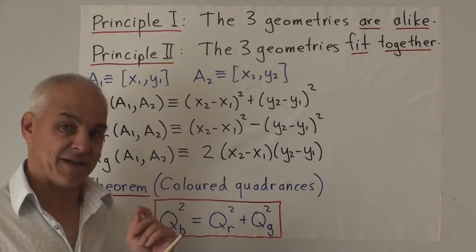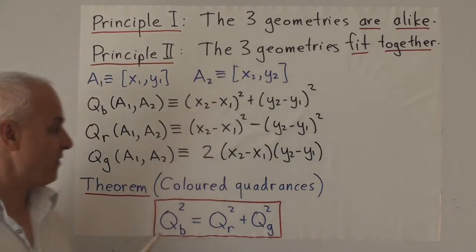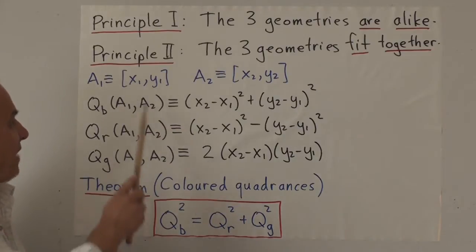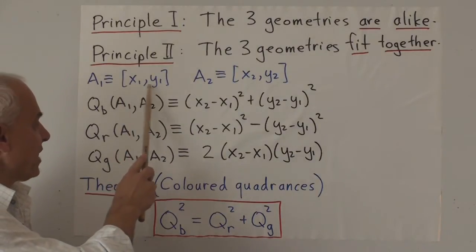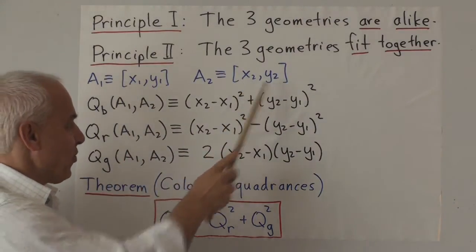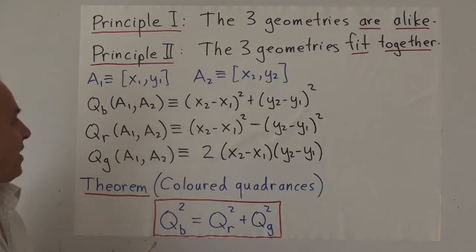Now let's remind you of a few basic definitions and a few fundamental facts that start chromo geometry. If we have two points A₁ = (x₁, y₁) and A₂ = (x₂, y₂), then the quadrance between these two points can be measured in three different ways.